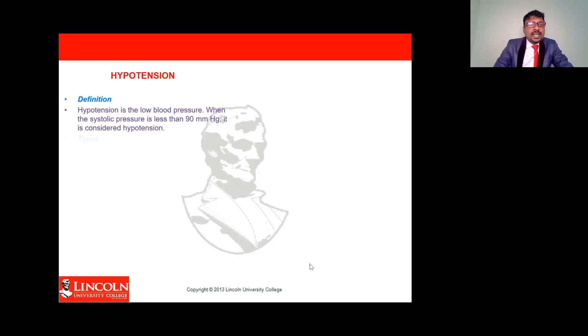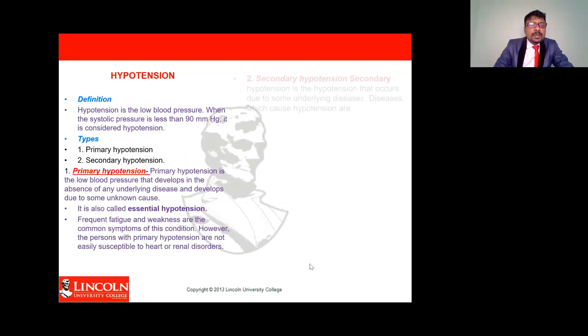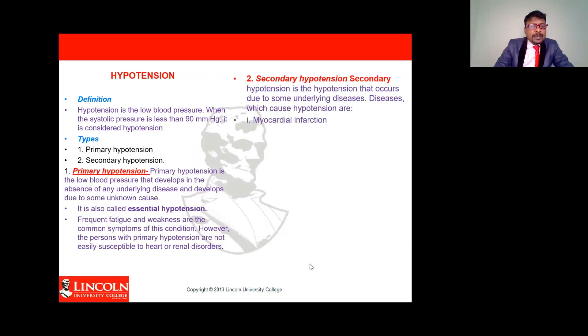Another pathological variation is hypotension. Hypotension is a decrease in blood pressure. This decrease in blood pressure also has two types.